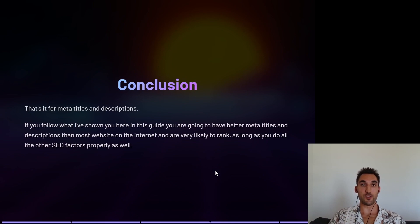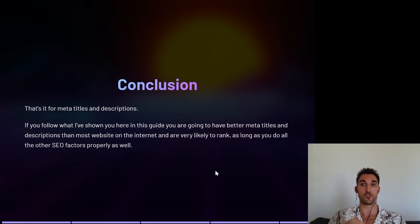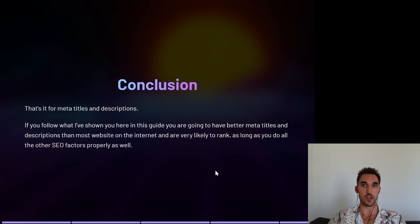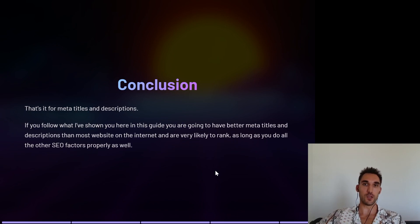So that's it for meta titles and descriptions — this is really all you need to know. If you follow this guide, you're going to have better meta titles and descriptions than most websites on the internet and will be very likely to rank, as long as you include the keywords you're trying to rank for, they're unique on every page, and you do all the other SEO factors properly as well. If this was helpful, I would appreciate a like and subscribe. I've also got a full SEO course on YouTube — I'll put that link below so you can watch all my SEO videos. If you have any questions, feel free to put them in the comments below and I will reply. I hope that was helpful — I'll catch you on the next one.